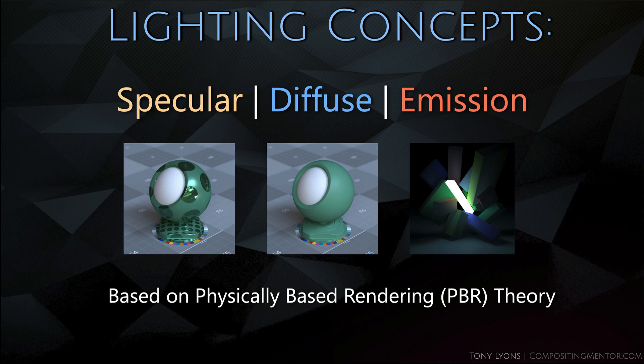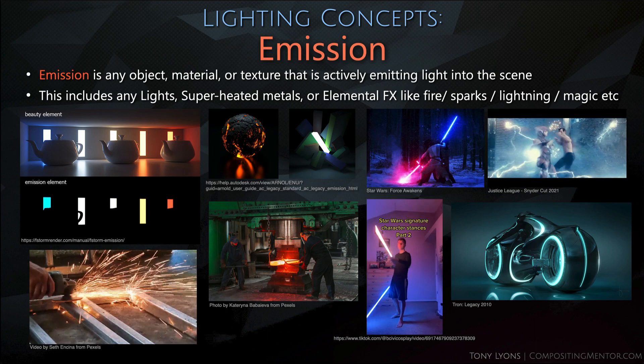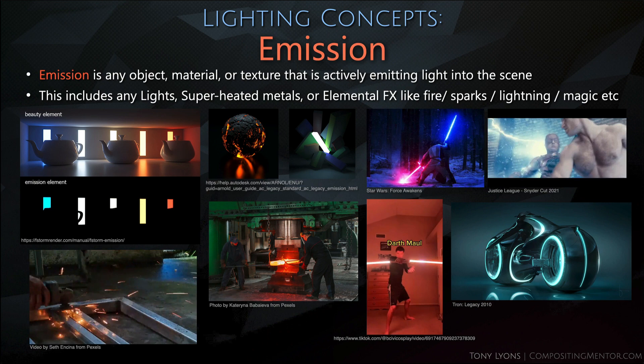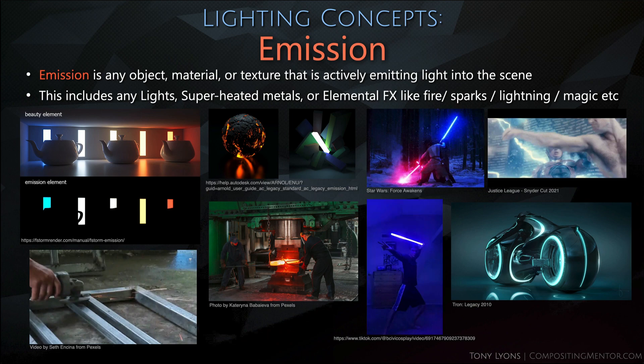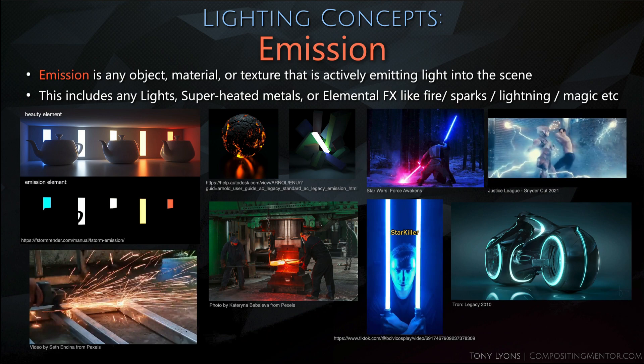Now that we've seen real-world examples, let's talk about what's making these different components. Why is it specular versus diffuse versus emission? I'll start with emission because it's the easiest to explain. Emission is any object, material, or texture that is actively emitting light into the scene. This includes any lights, superheated metals, or elemental effects like fire, sparks, lightning, magic, etc.